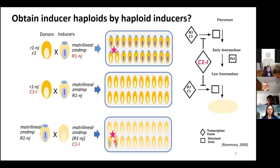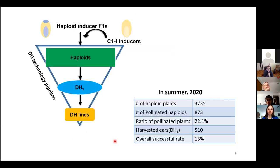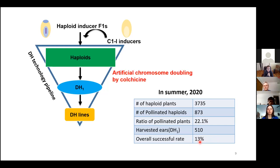In summer 2020, we produced 510 inducer DH lines in the field. In the beginning, there were 3,700 haploid plants transplanted in the field, but only 22% of haploid plants had pollen shedding. The overall successful rate of DH production was just 13%. Based on this result, artificial chromosome doubling is a critical factor in DH technology as well.